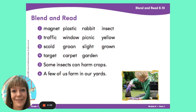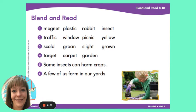Blend and read. Let's look at the words in line one. Read them with me now. Magnet. Plastic. Rabbit. Insect. What do you notice about the words?